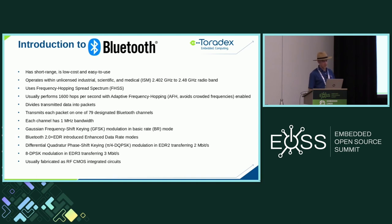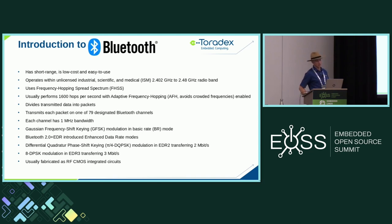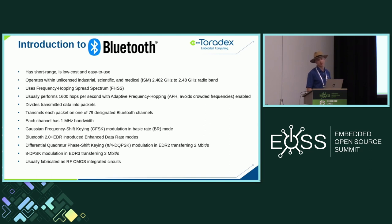It operates within the unlicensed ISM band at 2.4 GHz, which of course carries a danger of interference — Wi-Fi, microwave ovens, and similar sources. That's why it uses frequency hopping spread spectrum, typically performing 1,600 hops per second. With later specifications, it does this adaptively, basically avoiding congested portions of the 2.4 GHz band.